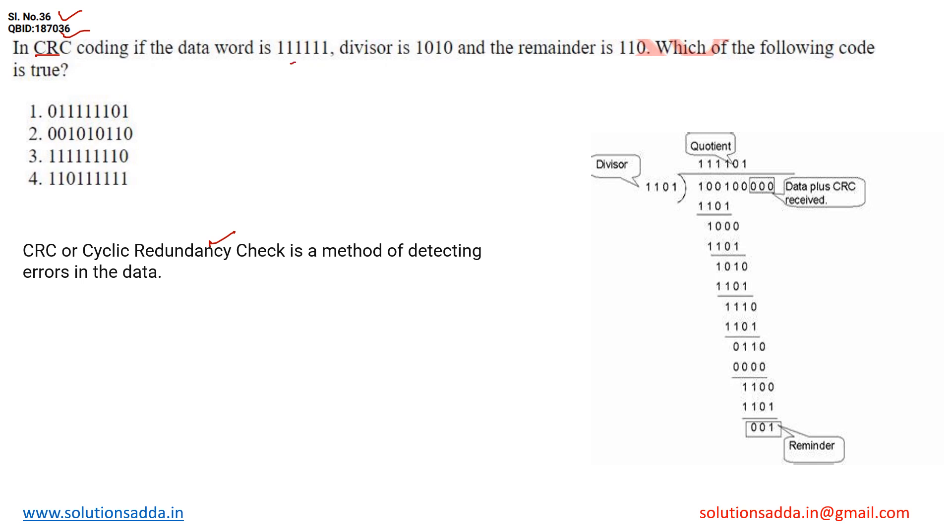If the data word is given along with a divisor and remainder in the question, which of the following code is true? So first of all, you need to know what are the data word, divisor, and remainder. We are given in the table in the question as well. So we have this data word here and we have the divisor.